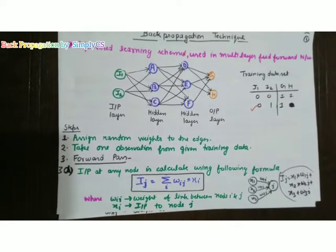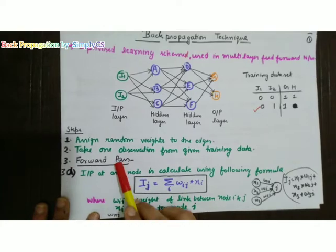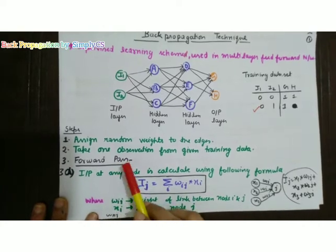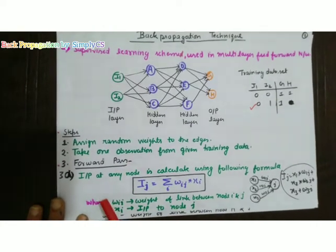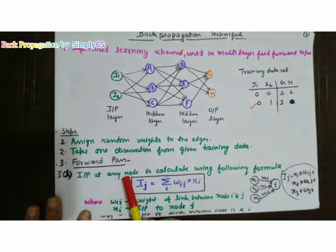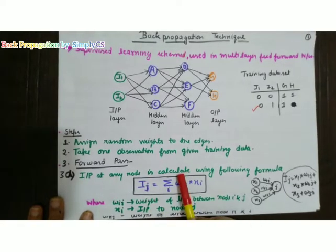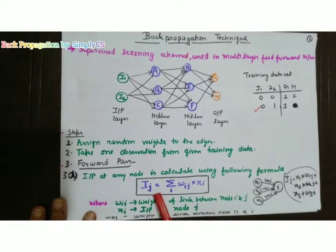The third step is the forward pass. In the forward pass, the input at any node is calculated with the help of a formula.